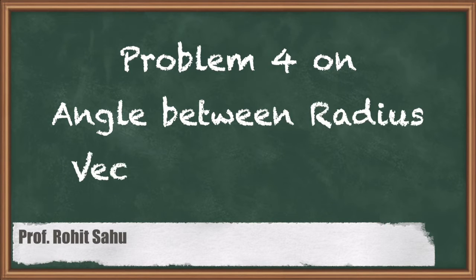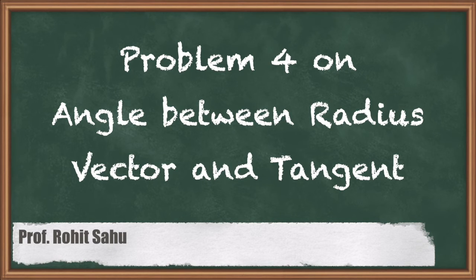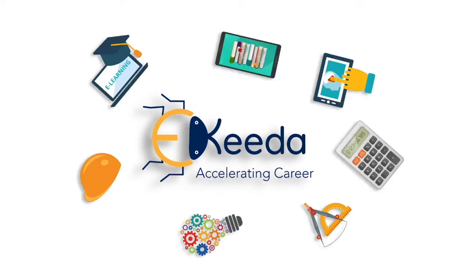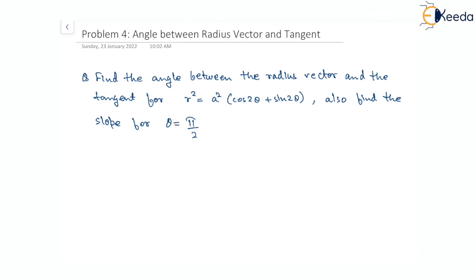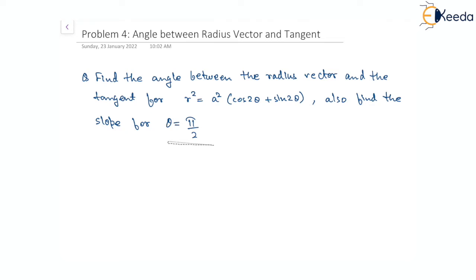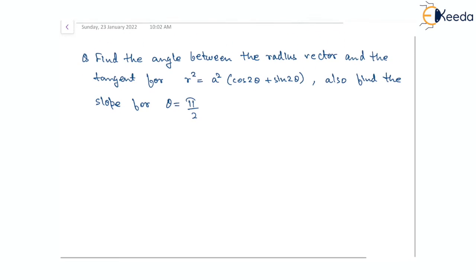Hello, in this session we'll see another question on angle between radius vector and tangent. We have to find the angle between the radius vector and the tangent where the polar curve is given as r² = a²(cos2θ + sin2θ). We also need to find the slope of the tangent for θ = π/2.